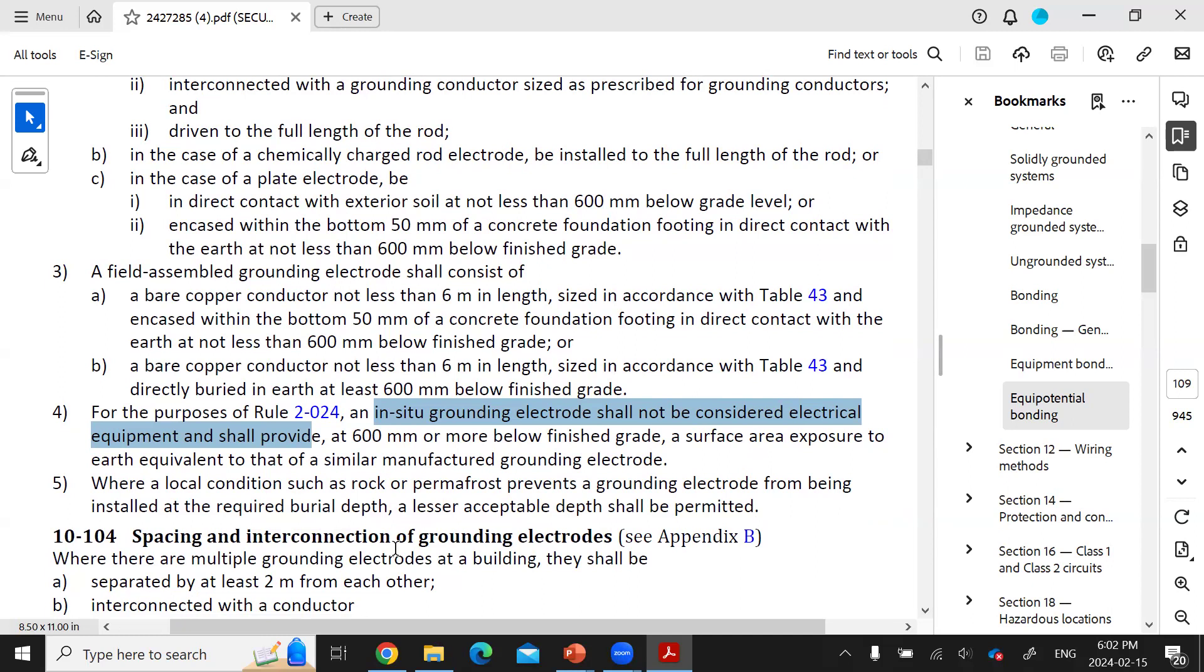This in-situ grounding electrode that is performed in the in-situ environment provided by the building's infrastructure, such as a water piping system, metallic reinforced concrete slab, etc., also have to be 600 millimeters below the surface. This minimum surface area has to be the same as that of a grounded electrode, which is 0.2 meters squared.